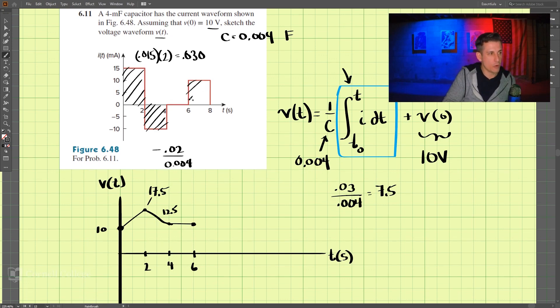Now, lastly, we do this portion, which is going to be 0.01 times 2, divided by this value, 0.004, and that is positive 5, positive 5, and we add that to 12.5. So that goes up to here, right here, and that is now at 17.5 volts.